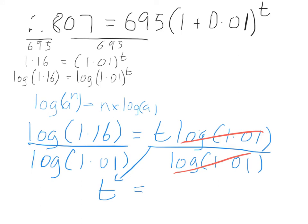And this bit here I'm circling here, is just a calculator operation. On your calculator, you'll find a log button. It'll literally be L-O-G on your calculator. And you type into your calculator, log 1.16, close bracket, divided by log 1.01, close bracket, equals. So, it's a calculator operation. And you do that division and you'll get an answer, approximate to decimal places, of 15.02.